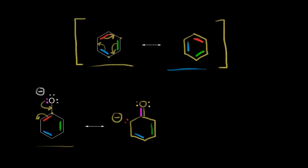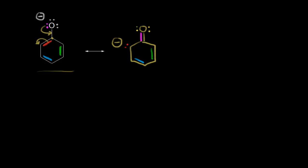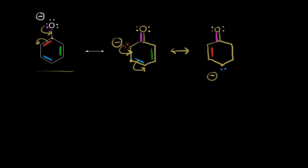We have the exact same pattern again — a lone pair of electrons next to a pi bond. The lone pair are the electrons in red, next to the pi bond in blue. We take the electrons in red and push them into here, which means too many bonds to this carbon, so we take the electrons in blue and push them off onto this carbon, giving it a negative one formal charge. The carbon with the blue electrons now carries the negative one formal charge.